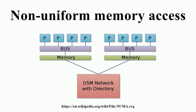Non-uniform memory access is a computer memory design used in multiprocessing, where the memory access time depends on the memory location relative to the processor. Under NUMA, a processor can access its own local memory faster than non-local memory.